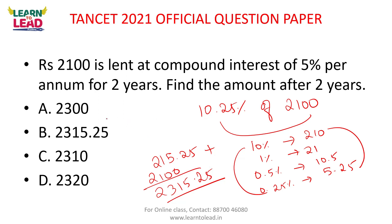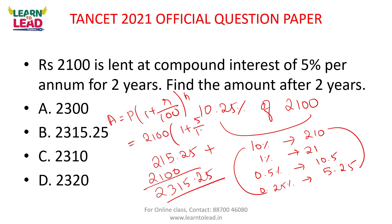Find the amount after 2 years. Amount = P × (1 + r/100)^n. The principle is 2,100 into (1 + 5/100)^2. This is the simple method — it means mind calculation. You can share: 1 + r/100.